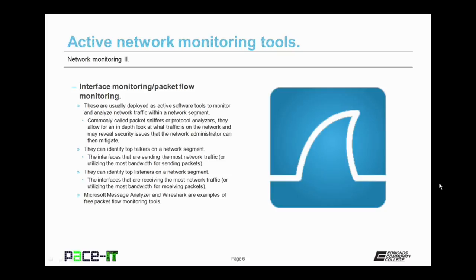Packet sniffers can also help to identify top listeners on a network segment. A top listener is that interface or the interfaces that are receiving the most network traffic — those interfaces utilizing the most bandwidth for receiving packets. This can help an administrator when they have determined that load balancing might be needed on the network. Microsoft Message Analyzer and Wireshark are examples of free packet flow monitoring tools.